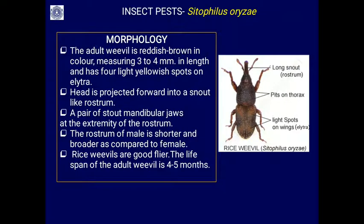The adult weevil of Sitophilus oryzae is reddish-brown in color with a typical beetle-like body. It has elytra - the hardened upper wings that are jointed and cover the lower wings used for flying. This is the typical Coleoptera character. The insect is about 3 to 4 millimeters in length.